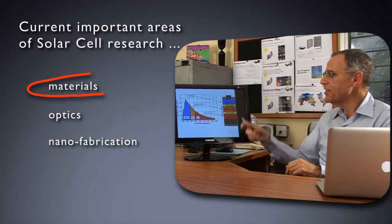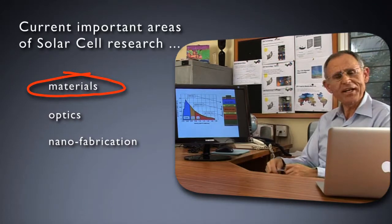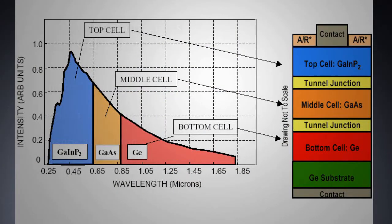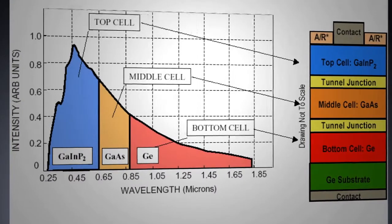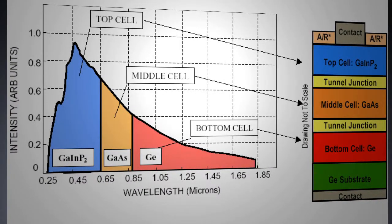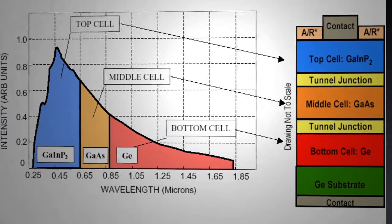In terms of materials, this is a state of the art schematic of a state of the art solar cell, which uses three different materials. This is just a graph of how the intensity of the sunlight we receive on Earth depends on the wavelength of that light. And it's just illustrating how each of these materials is tailored to a part of the spectrum.